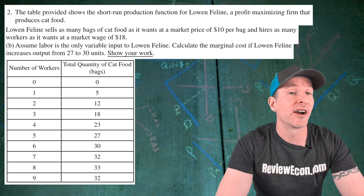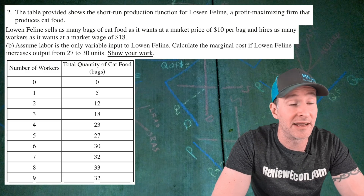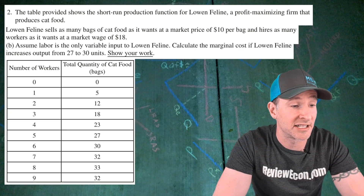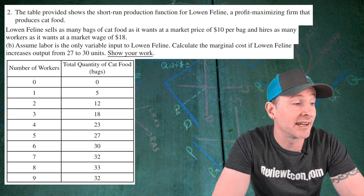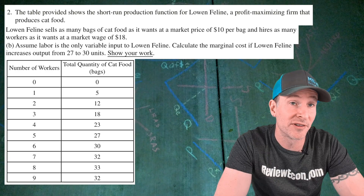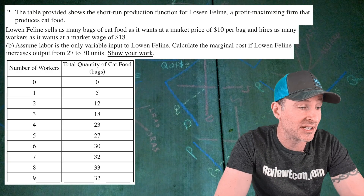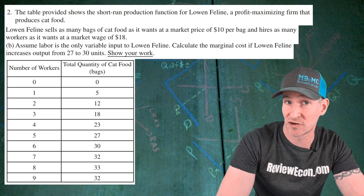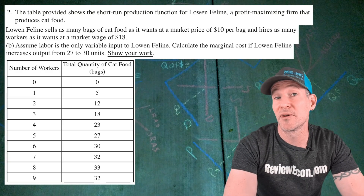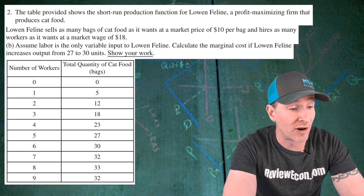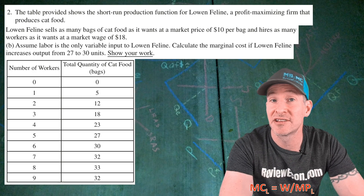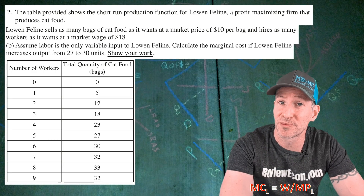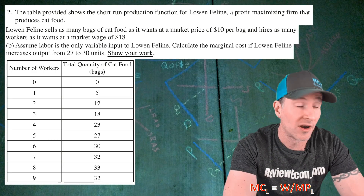For part B, we are asked to calculate the marginal cost if Low-End Feline increases output from 27 units up to 30 units, and we have to show our work. Remember, the formula for the marginal cost of labor is the wage divided by the marginal product of labor.